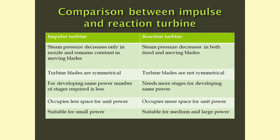We can now compare impulse and reaction turbines. For impulse turbine, steam pressure decreases only in the nozzle and remains constant in moving blades; for reaction turbine, steam pressure decreases both in fixed and moving blades. The turbine blades are symmetrical for impulse turbine and not symmetrical for reaction turbine. For developing the same power, reaction turbine needs more number of stages compared to impulse turbine, and therefore needs more space for unit power, while impulse turbine needs less space. Impulse turbine is suitable for small power applications, and reaction turbine is suitable for medium and large power applications.